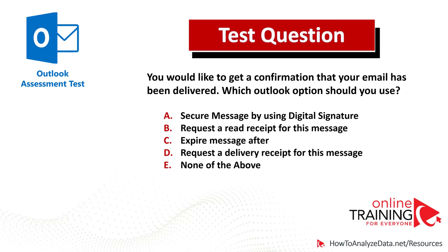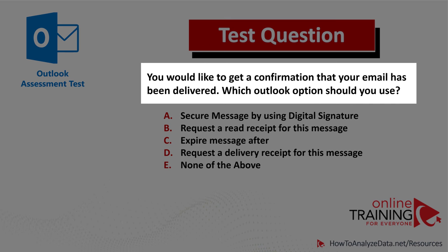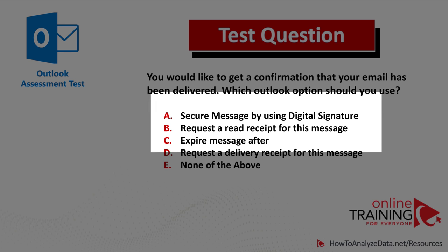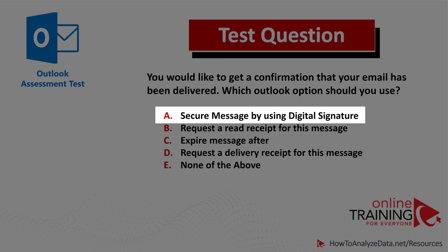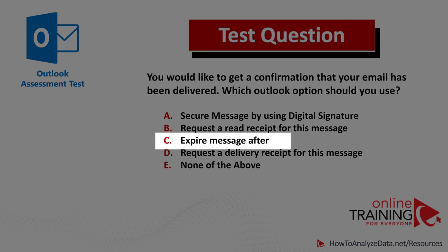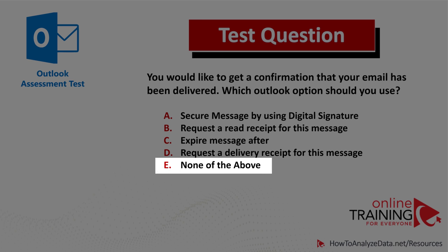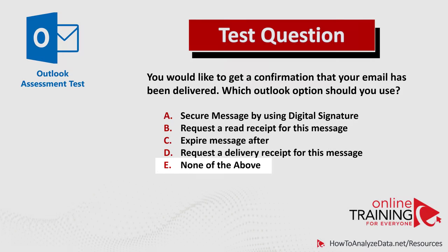Let's look at an interesting and tricky question. You would like to get a confirmation that your email has been delivered. Which Outlook option should you use? There are five choices: Choice A, secure message by using digital signature; Choice B, request a read receipt for your message; Choice C, expire message after; Choice D, request a delivery receipt for this message; and Choice E, none of the above. Do you think you know the answer? Let's see how we can get to the correct answer together.